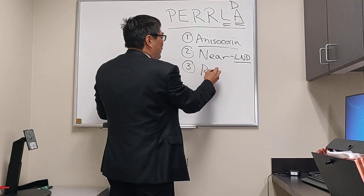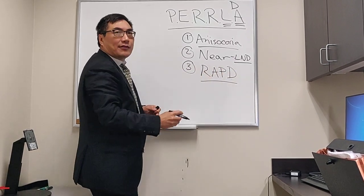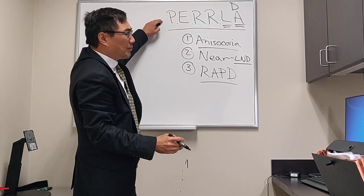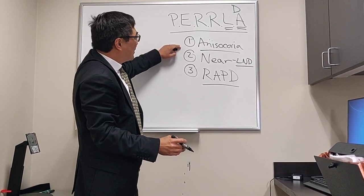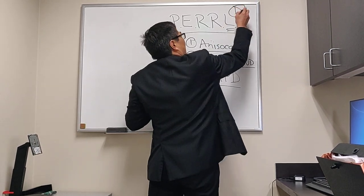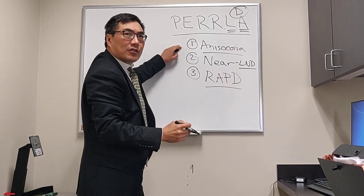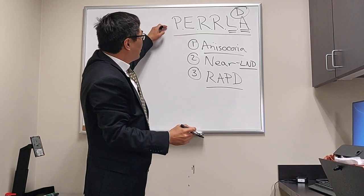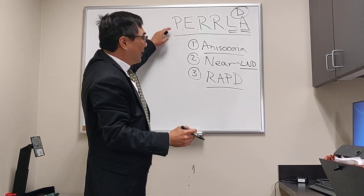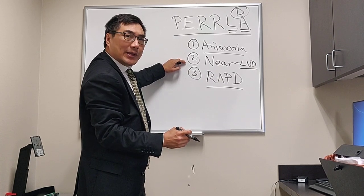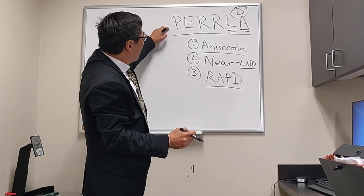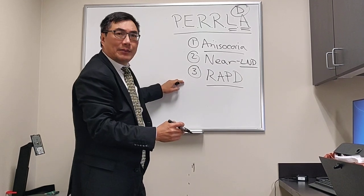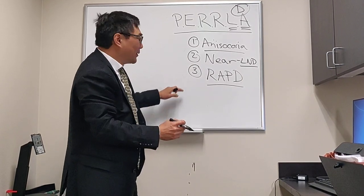We also have to have some assessment of the relative afferent pupillary effect. Literally, you could have a patient who is PERLA and have an anisocoria in the dark — and what we're looking for there is Horner's syndrome. You could also be PERL and have a light-near dissociation. And you could have PERLA with a pupil equal, round, reactive to light and accommodation, and still have an RAPD — a relative afferent pupillary effect.